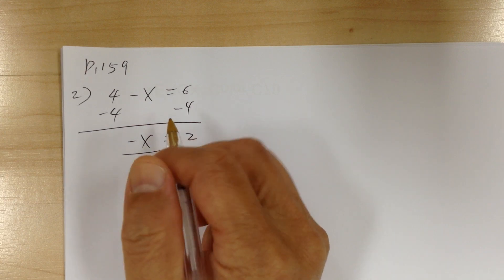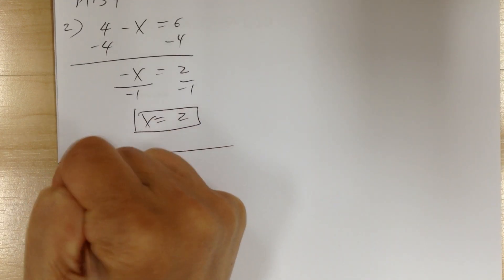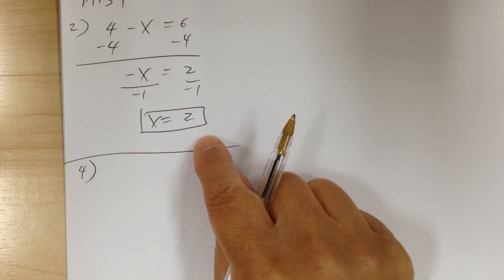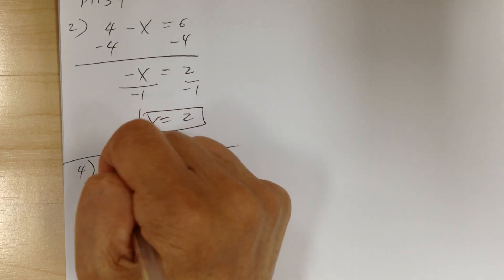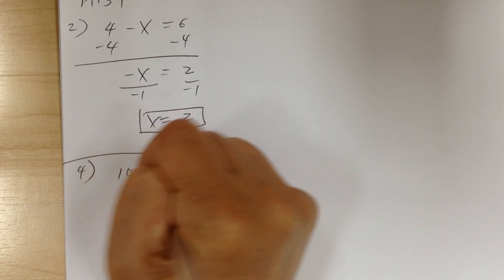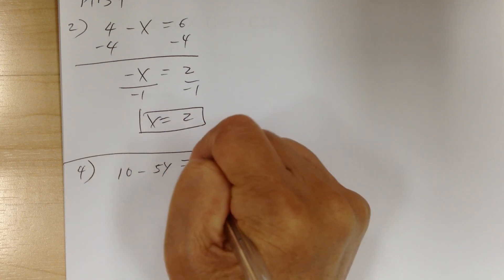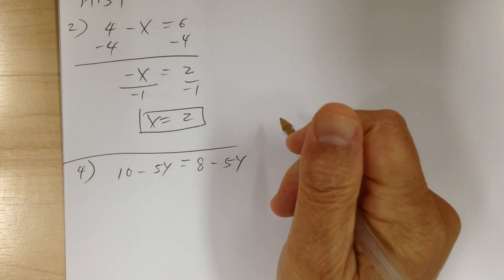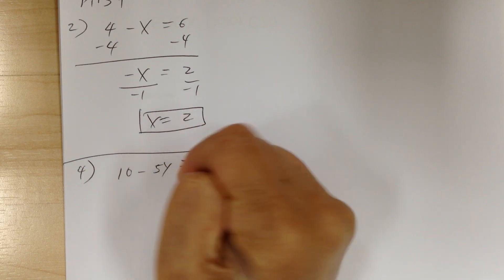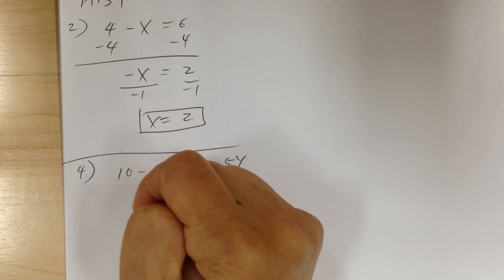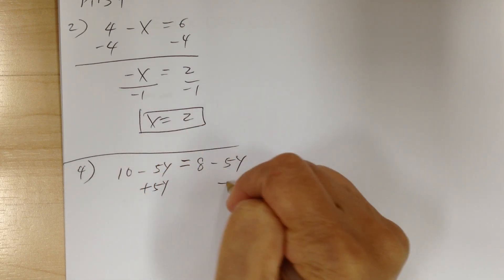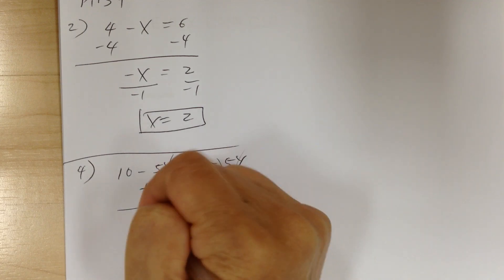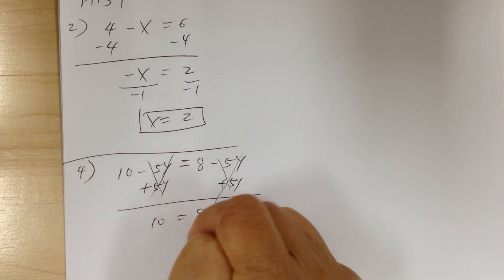Let's go to number 4. So this is called a conditional — when you have an answer, it's a conditional. So you got 10 minus 5y equal to 8 minus 5y. First let's consolidate the variables, so that's going to be plus 5y on both sides. Notice that the 5y terms cancel on both sides, so you get 10 equal to 8.